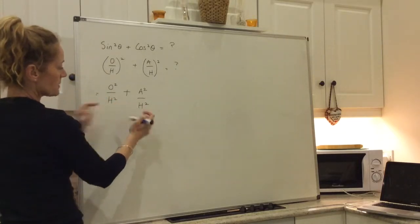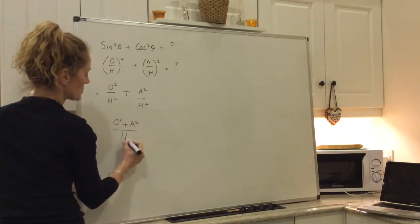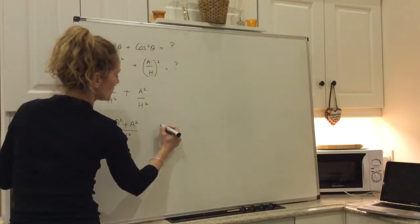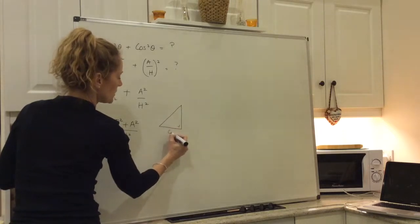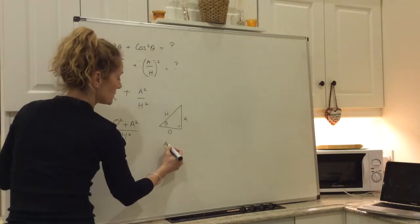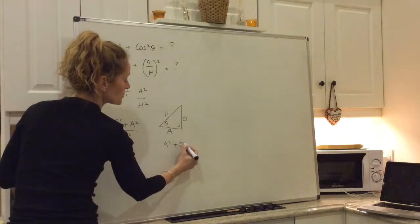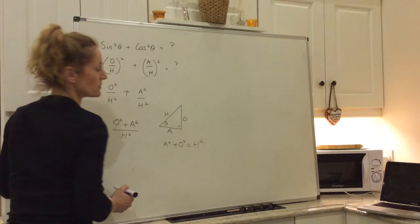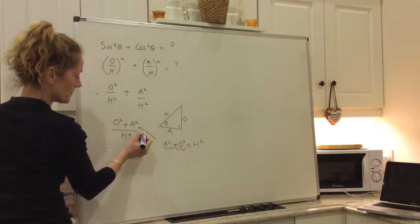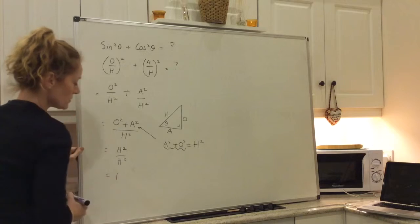When you add fractions, as long as the denominators are the same, you can just add the tops. So that's O squared plus A squared over H squared. Now, remember, right-angle triangle — one short side squared plus the other short side squared is equal to the long side, or the hypotenuse, squared. So we can replace A squared plus O squared here with H squared. So we get H squared over H squared, which is equal to one.